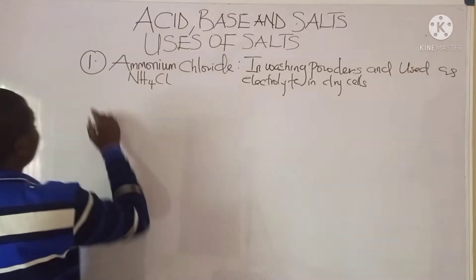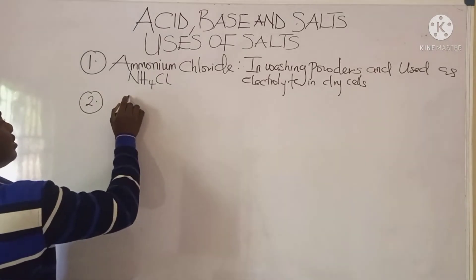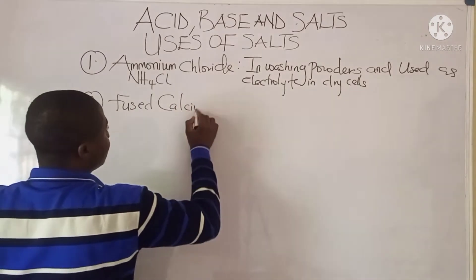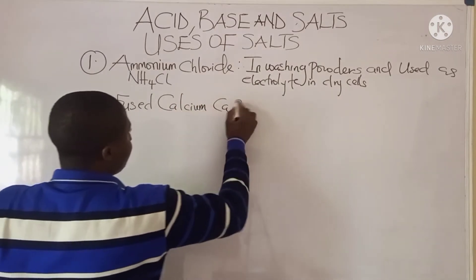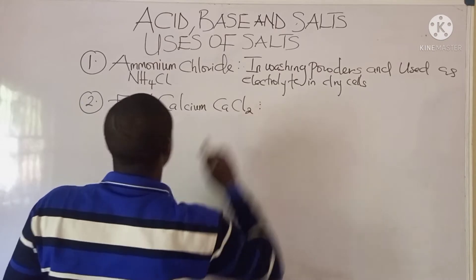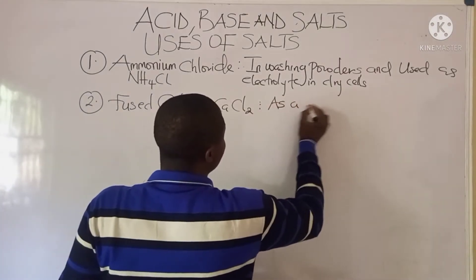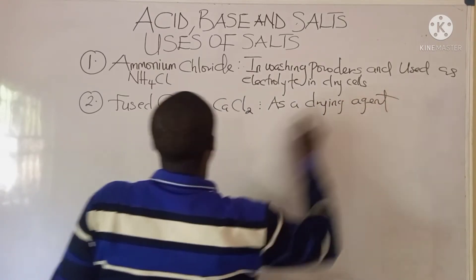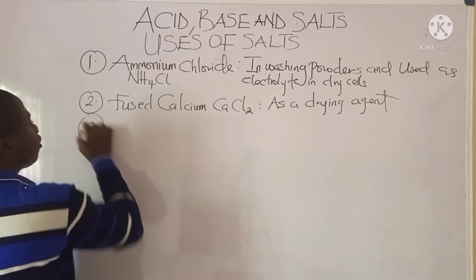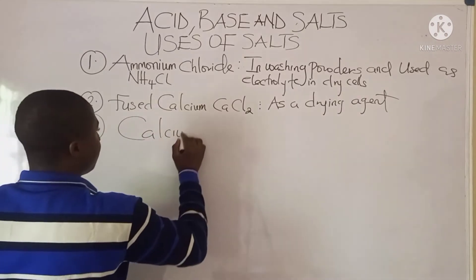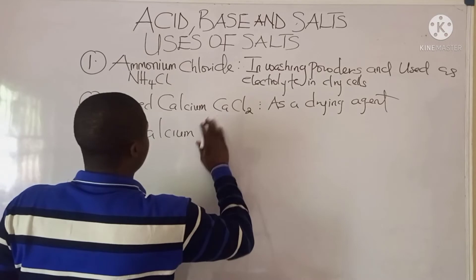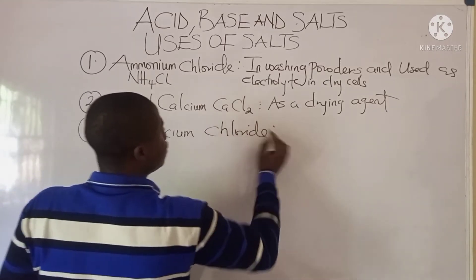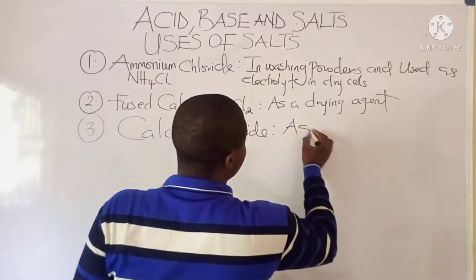Talking about fused calcium chloride — fused calcium chloride is basically used as a drying agent. Calcium chloride itself is used as an antifreeze.